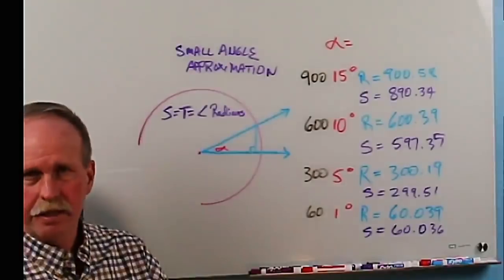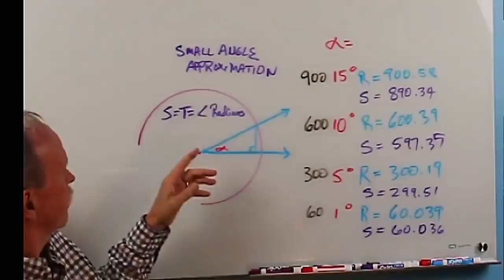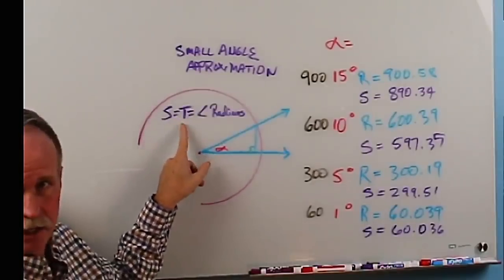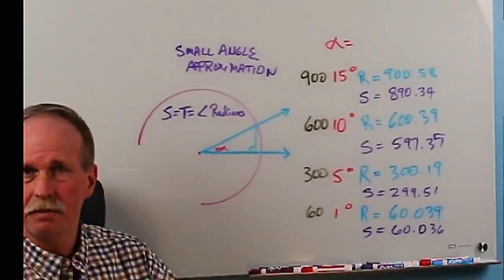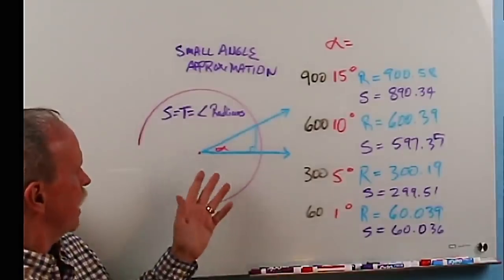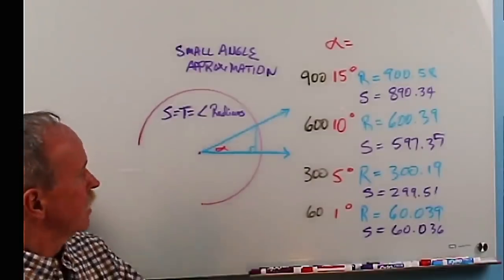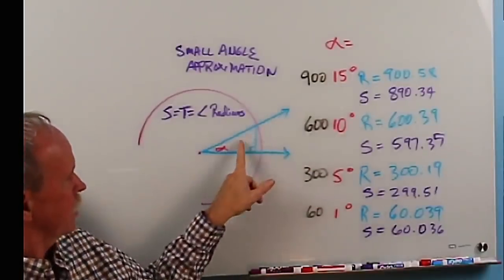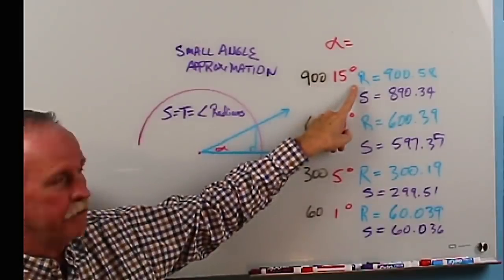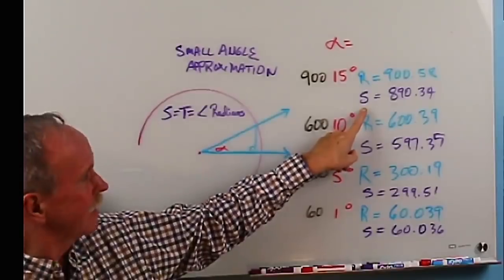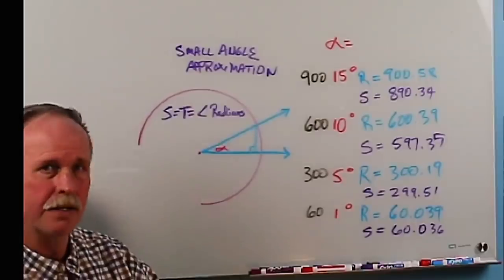Something that we talked about a little bit is small angle approximation. The small angle approximation in science says that for small angles, the sine and the tangent equal the angle in radians. To test that out, we can actually find the values for a number of different angles. Say we have the earth here with a radius of 3440 nautical miles. The distance across the ground for 15 degrees, if angle alpha is 15 degrees, would be 900 nautical miles. If we calculate it by radians, it's 900.58. And if we just take the sine, it's 890.34. At most 10 miles off over 900 miles.